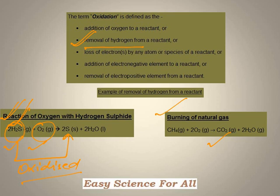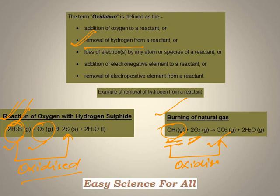Likewise, in this second reaction of burning of natural gas, you can see that there are two reactants, namely methane and oxygen. On reacting with oxygen, methane is getting converted to carbon dioxide — that is, hydrogen atoms are getting removed from the methane molecule. So we can see that methane has been oxidized, or in other words, oxidation of methane (CH₄) has taken place in this reaction.